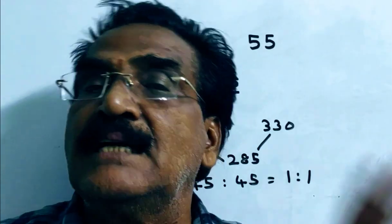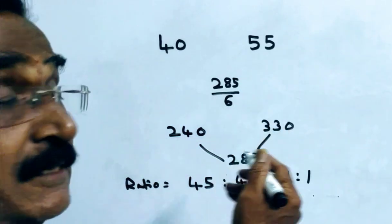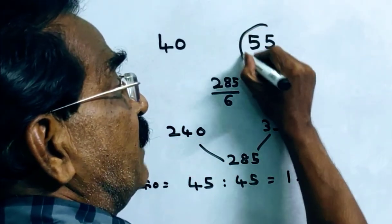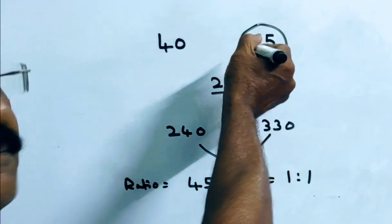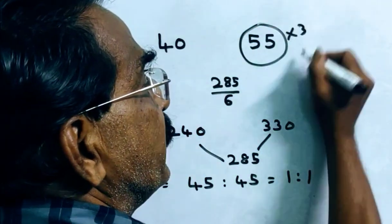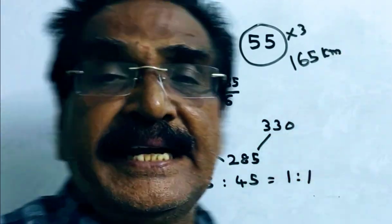So if he travelled 3 hours by train, the distance travelled by train is equal to 55 into 3. 165 km, he travelled by train.